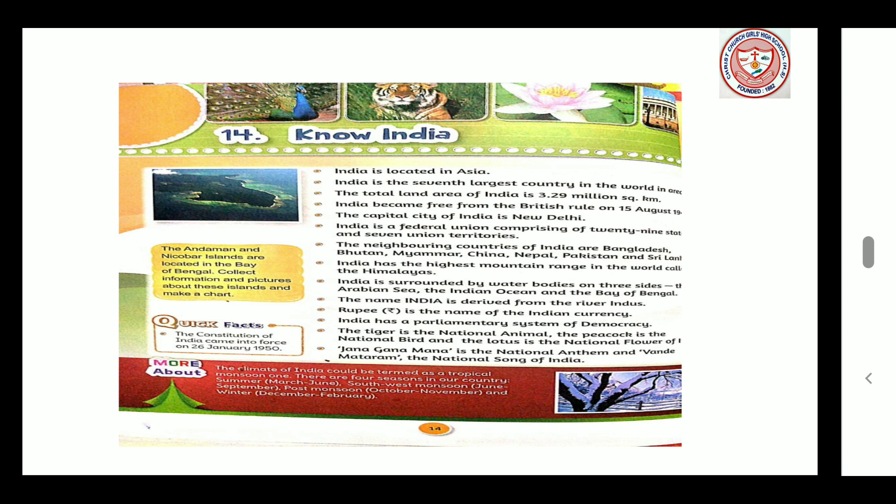Quick facts: The constitution of India came into force on 26th January 1950. More about the climate: The climate of India could be termed as a tropical monsoon one. There are four seasons in our country: Summer from March to June, South-West monsoon from June to September, Post monsoon from October to November, and Winter from December to February.